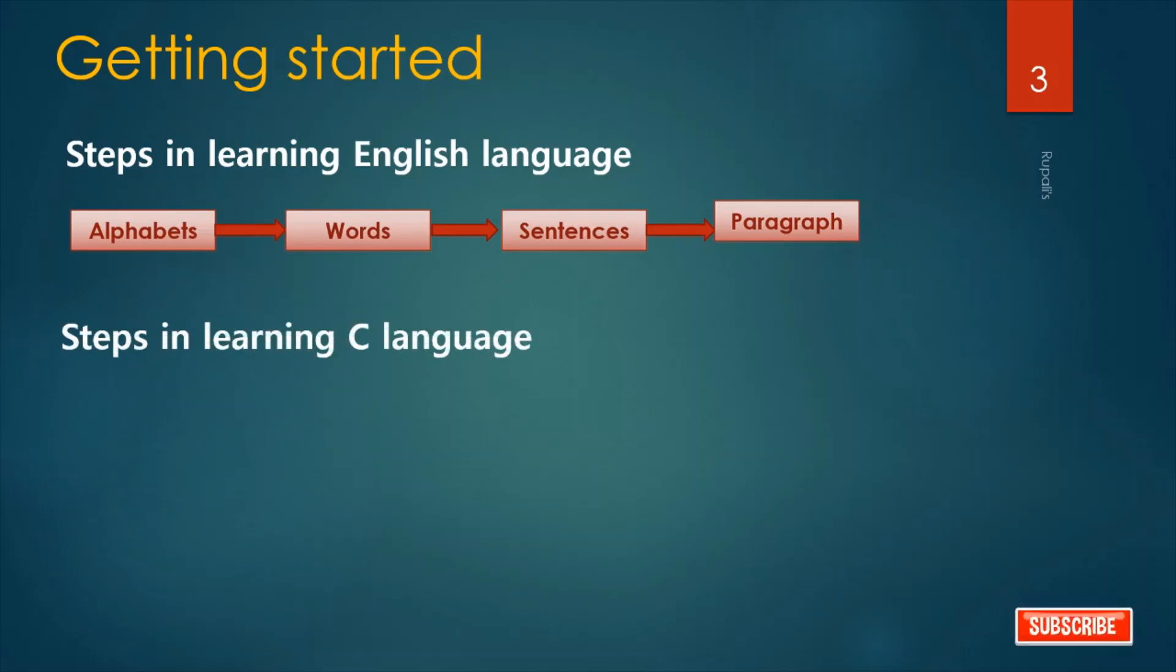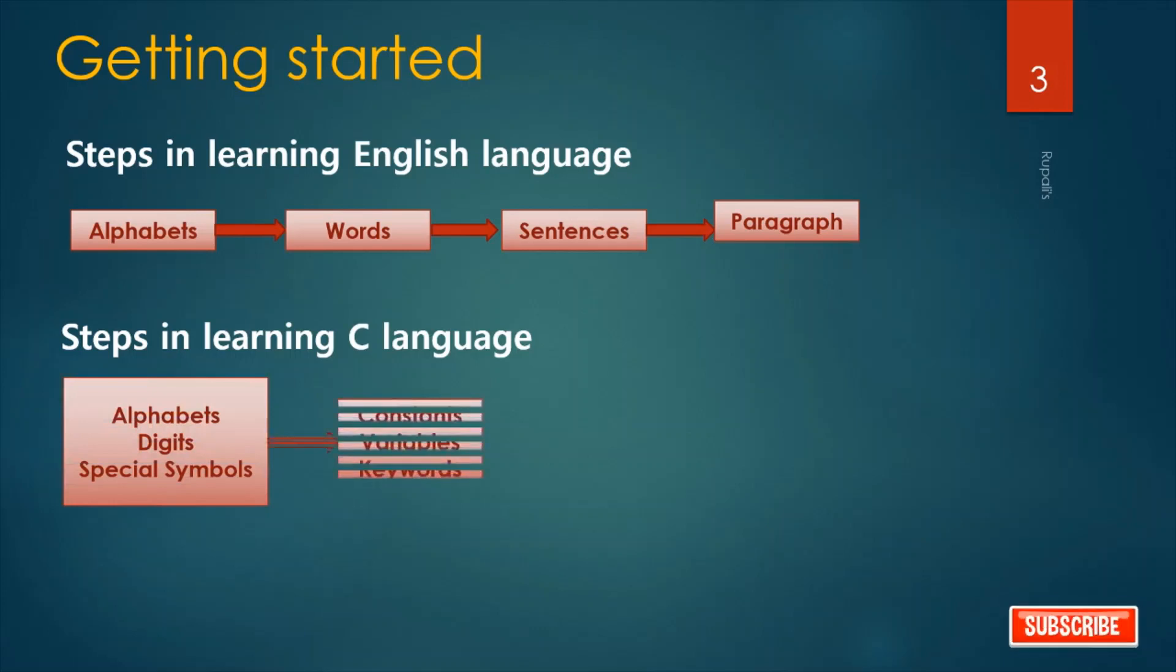In the same way, steps for learning C language: We must first know what alphabets, numbers and special symbols are used in C, then how using these constants, variables and keywords are constructed, and finally how these are combined to form instructions. A group of instructions would be combined later on to form a program.